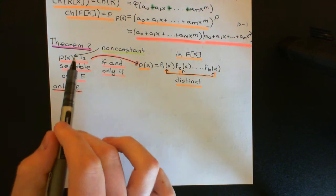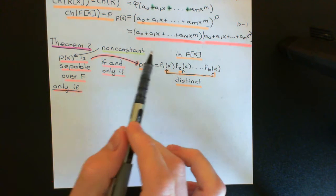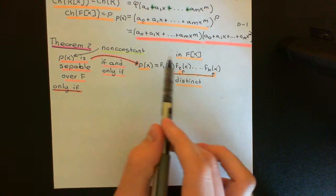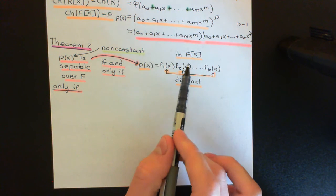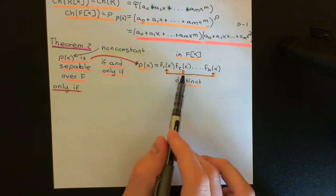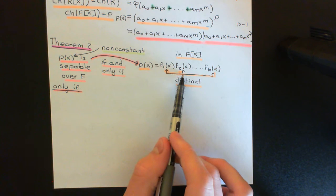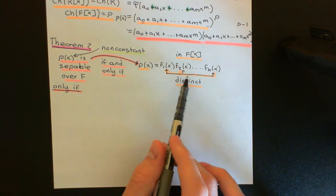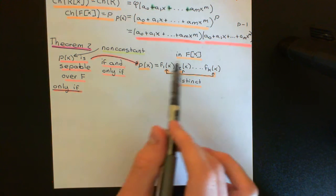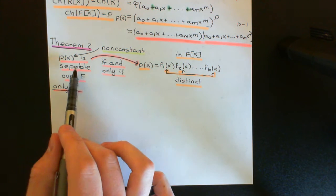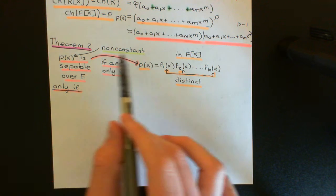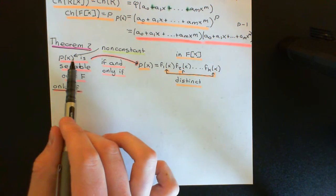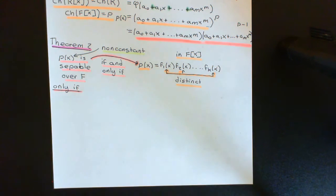The reason 'only if' corresponds to this direction is: if this being true implies that is true, then the only way for the first to be true is for the second to also be true — if the second weren't true, it couldn't be that the first was true, giving a contradiction. So the only way for separability to hold is for the distinct factorisation to hold.